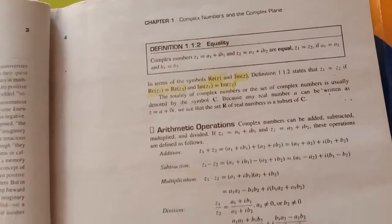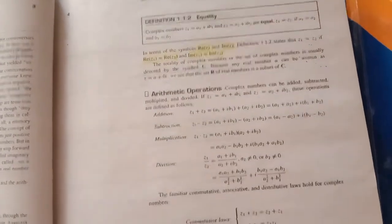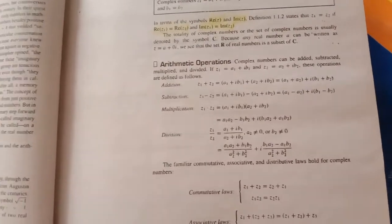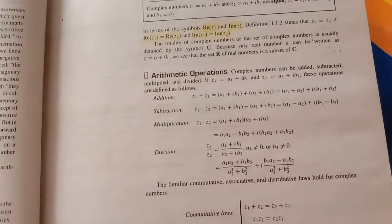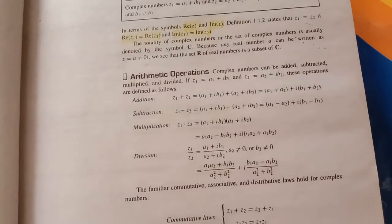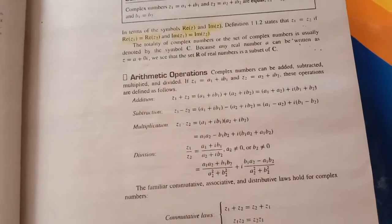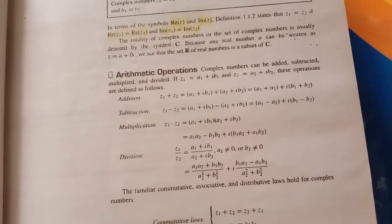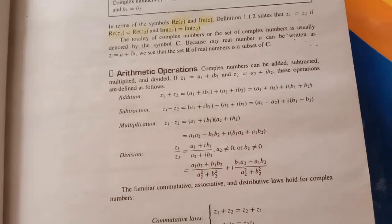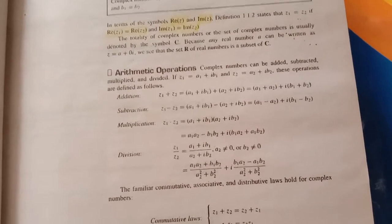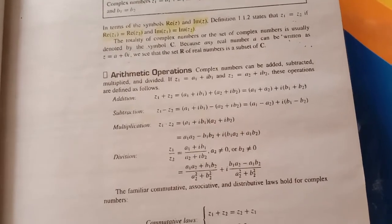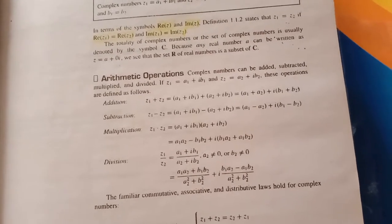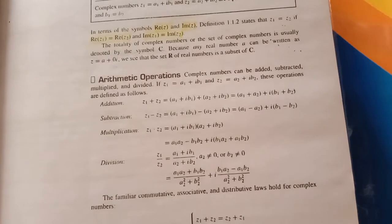Ab iske baad hai arithmetic operations of the complex number. Iske liye ham real numbers mein jo number add karte the, isi tarah ham complex numbers mein jo number add karte the. Ham kis tarah add karte the? Ham real numbers mein do numbers jis tarah add karte the, yaha par bhi ham usko is tarah add karte the, lakin fark sirf yeh hogi ki complex number mein two parts - ek hai imaginary part aur ek hai real part.